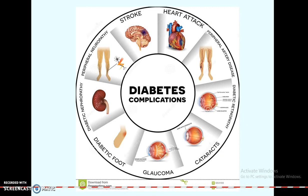If diabetes is not treated, it leads to different types of complications to the vital organs — like heart attack, peripheral artery disease, diabetic retinopathy, cataract, glaucoma, diabetic foot, diabetic nephropathy, and peripheral neuropathy.